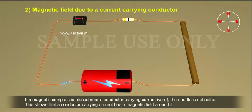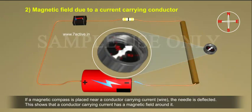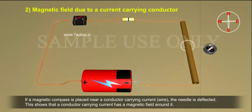If a magnetic compass is placed near a conductor carrying current wire, the needle is deflected. This shows that a conductor carrying current has a magnetic field around it.